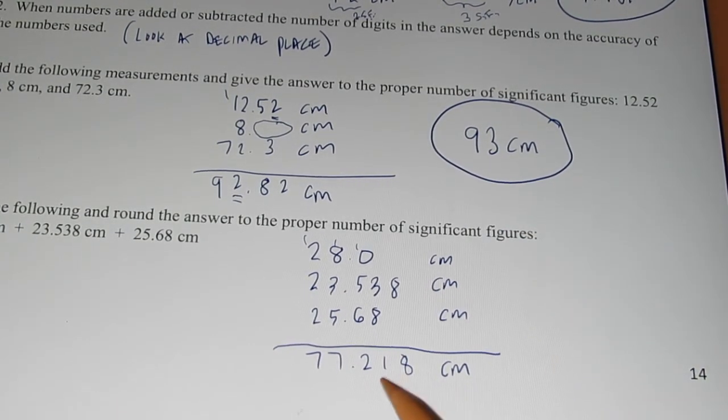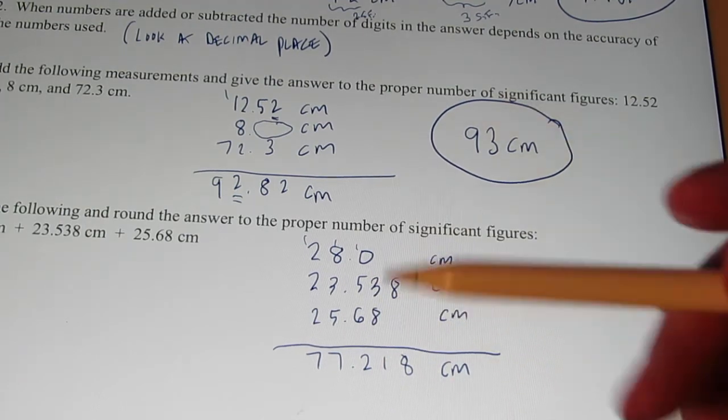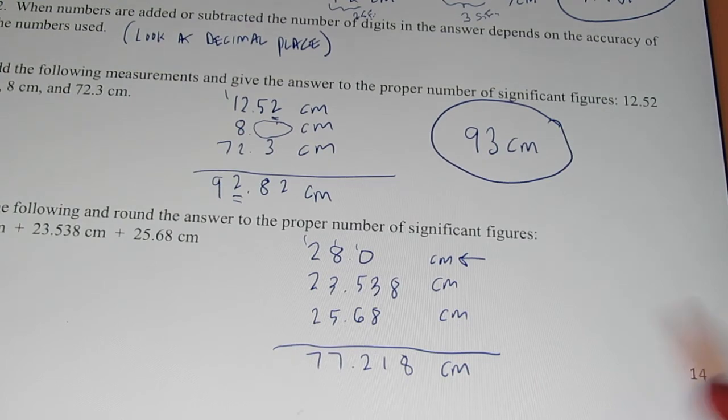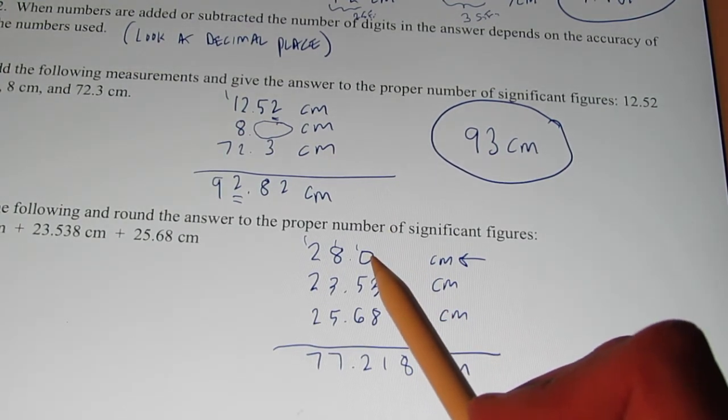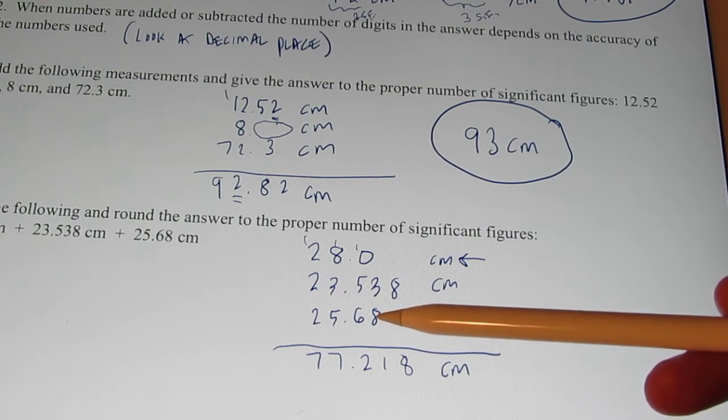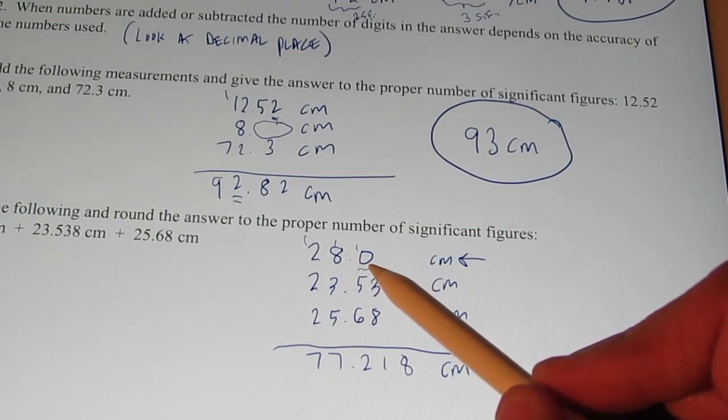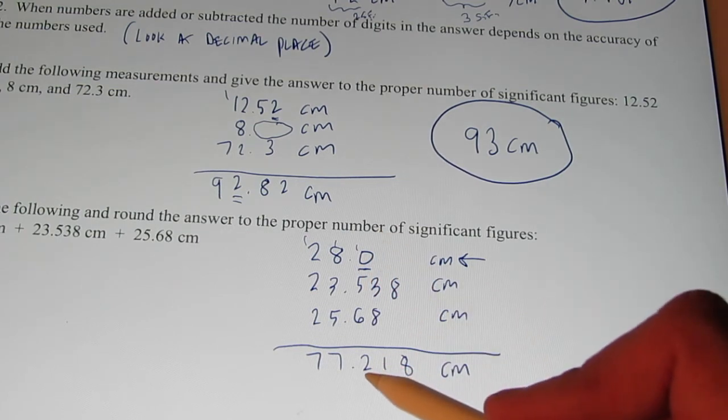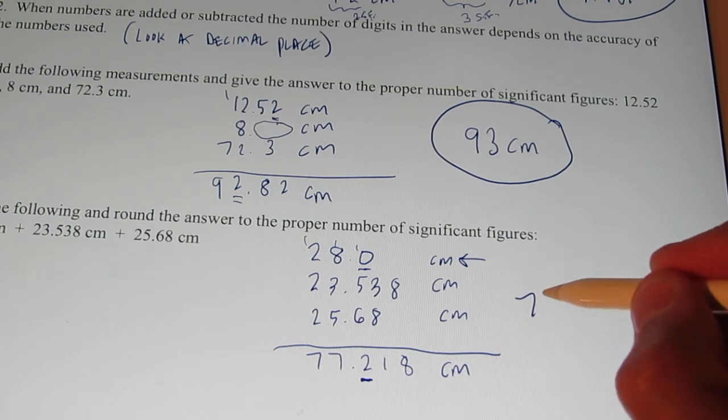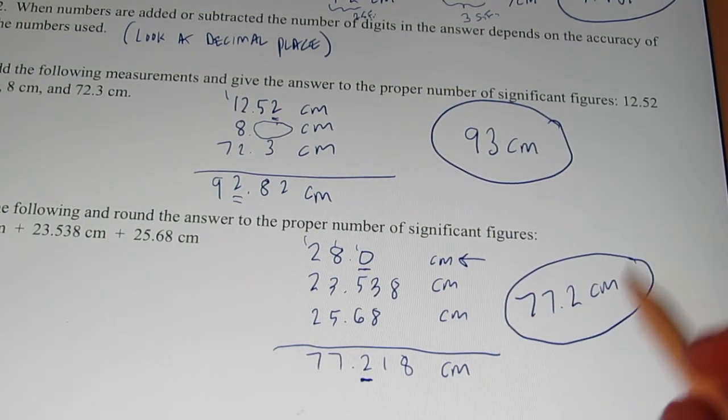So, let's go ahead. My answer is way more accurate than my least accurate piece of data. Don't you agree that this piece of data here is the least accurate? I only know it to the nearest tenth of a centimeter. This one I know to the thousandth. This one I know to the nearest hundredth. So, that means I have to round my answer off to the nearest tenth of a centimeter. So, I make my decision here. So, I'm going to round that off to 77.2 centimeters.